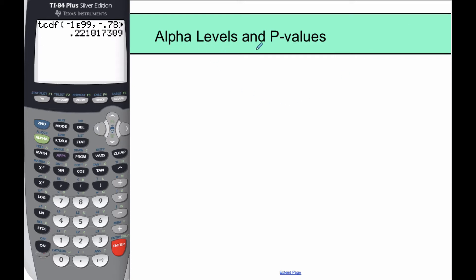In this video today, we're going to talk about alpha levels and p-values for what we know as hypothesis testing. They're quite intricately related, and alpha level goes along with what we call z-star or t-star, and the p-values go along with our z-test or t-test statistic.